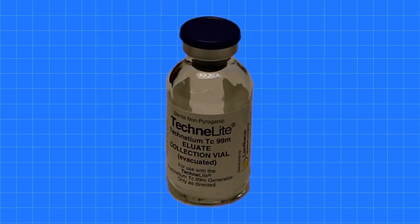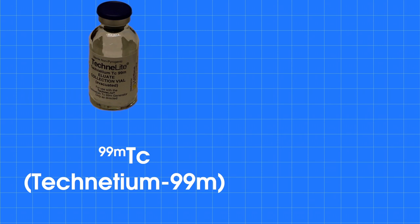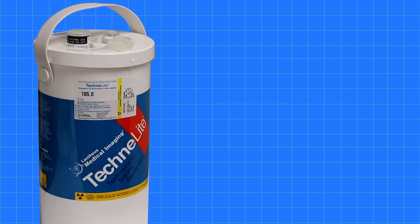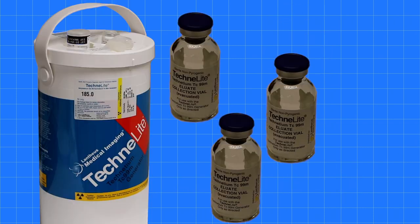A generator allows for the creation of a short-lived radionuclide, which is derived from a longer-lived radionuclide. This describes the parent-daughter relationship of the molybdenum generator that produces technetium for patient use.